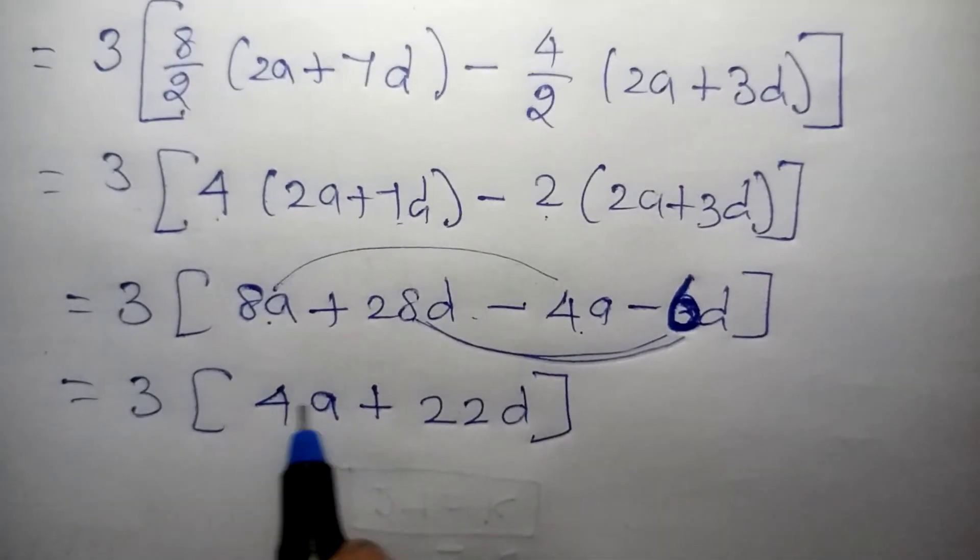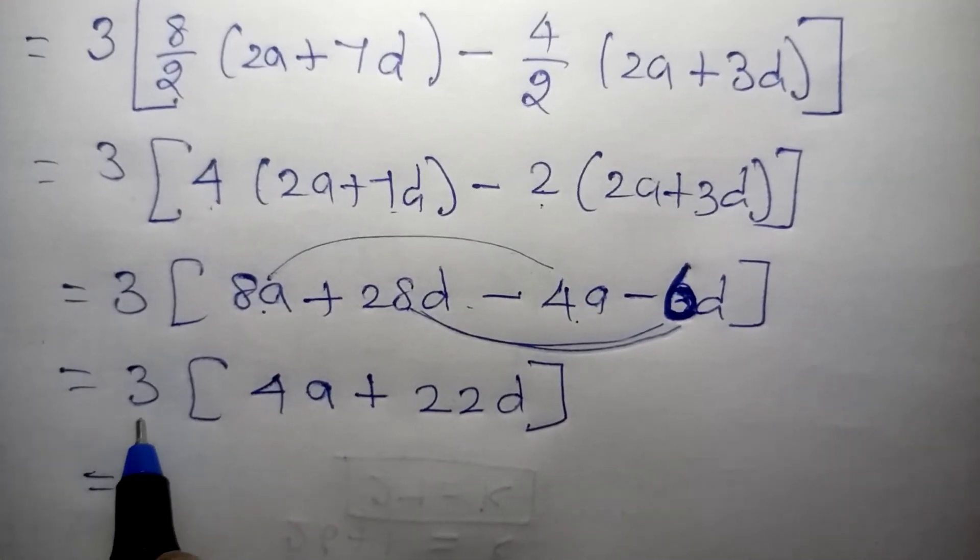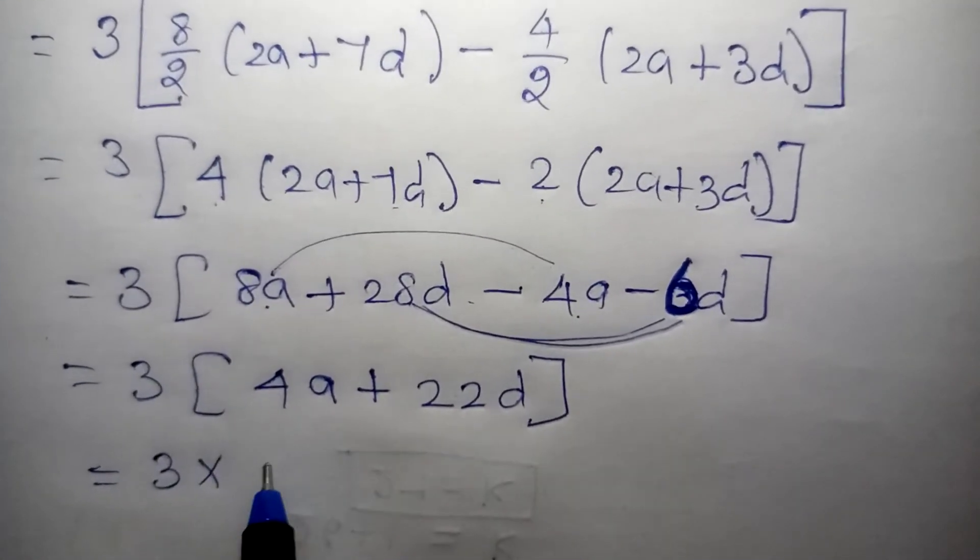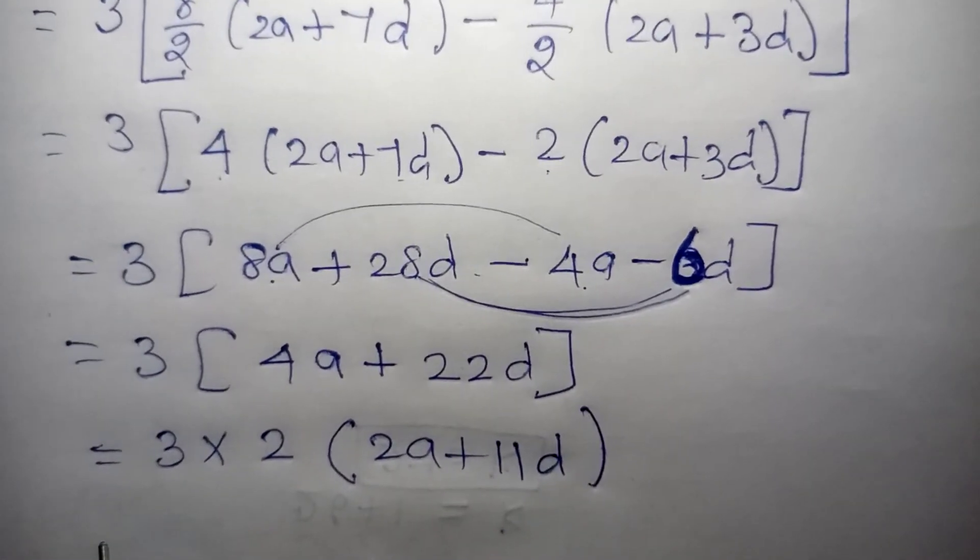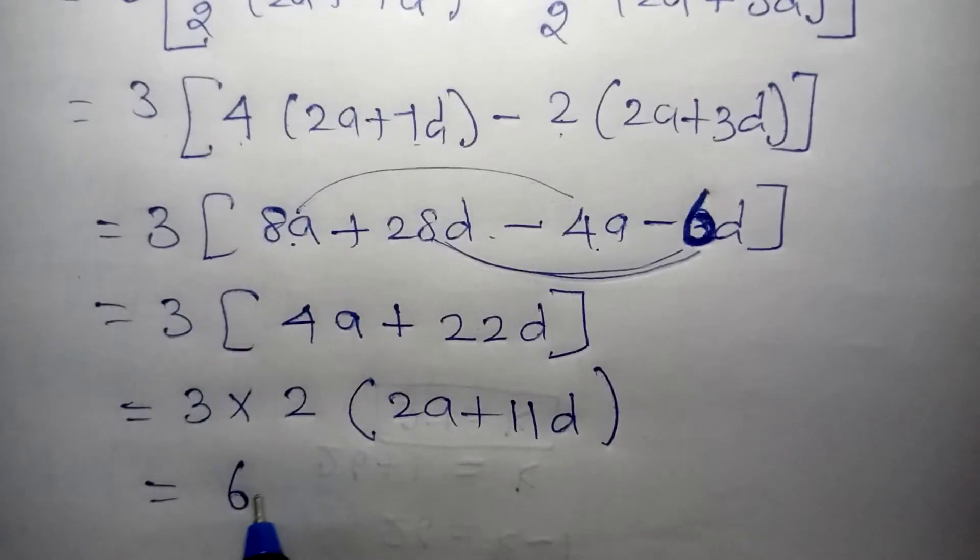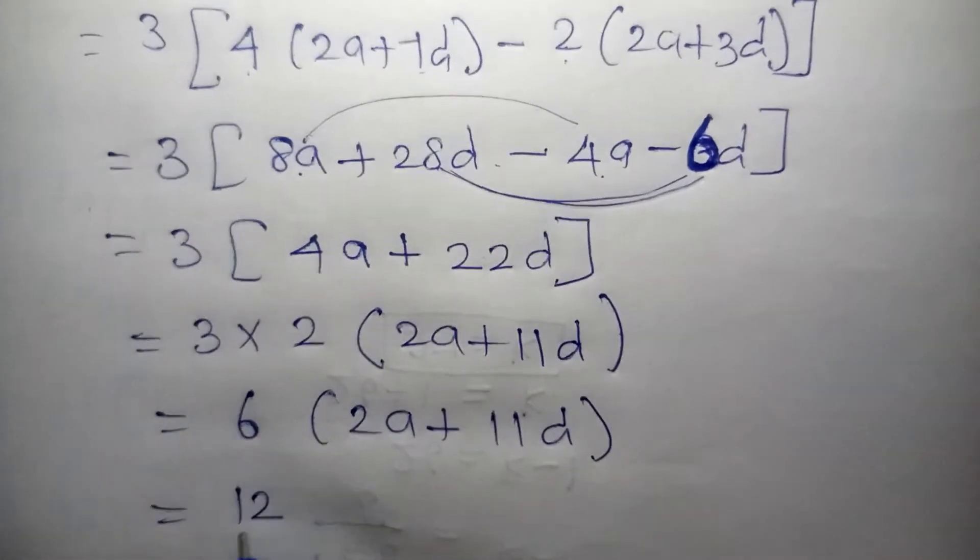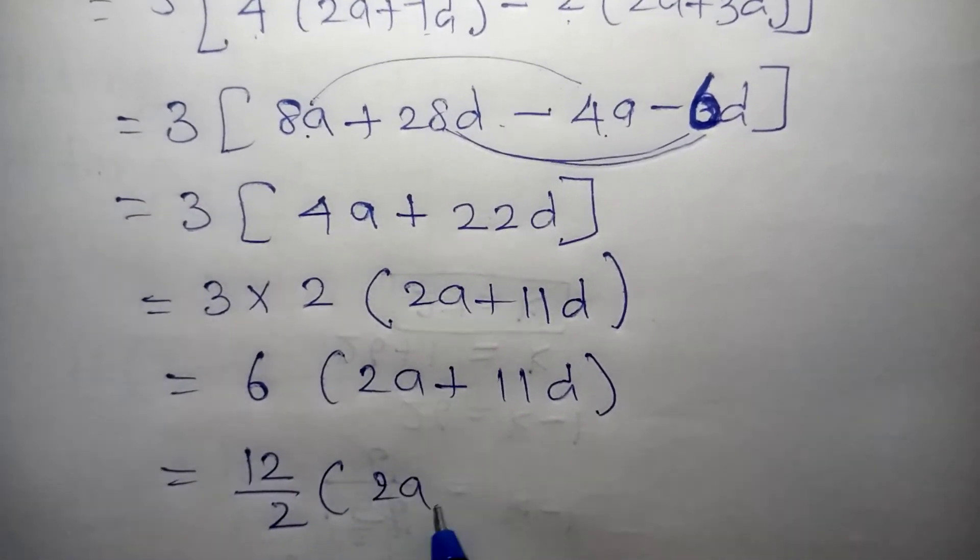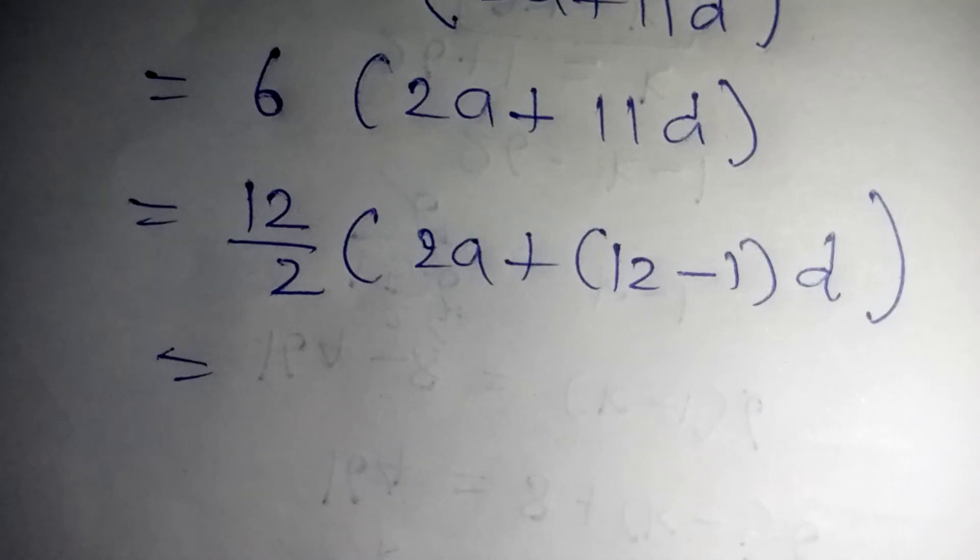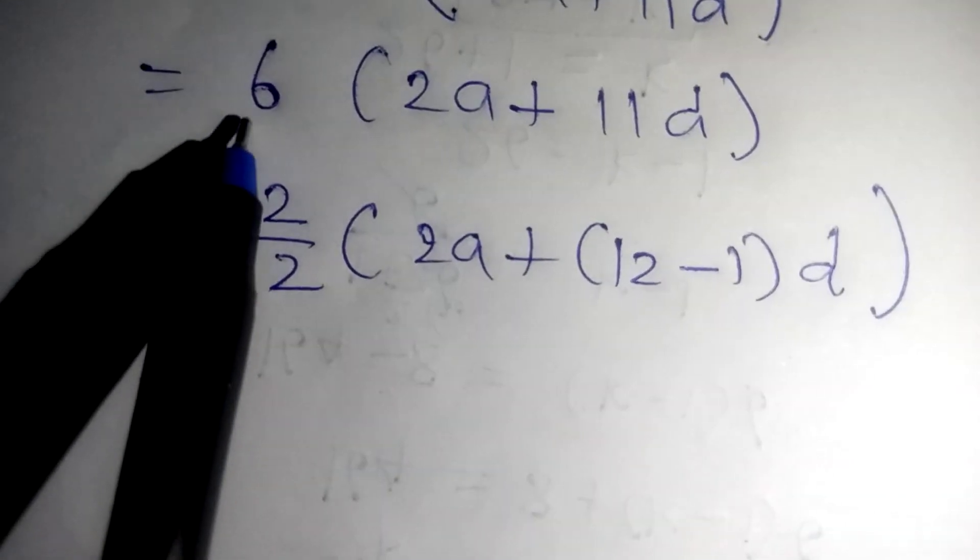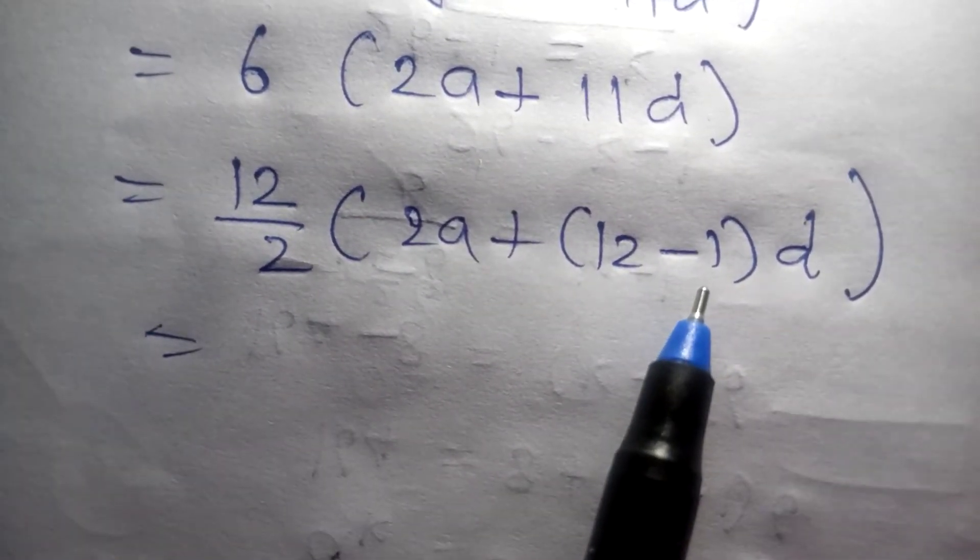Now d, 28d minus 6d, from 28 if I subtract the 6 that will give you 22d. Now we are getting this. From these two, what is a common table means? 2 table is common. Let us take the 2 outside. Now here outside we already have a 3. Now 3 into 2 we have taken out, so the remaining is 2a plus 11d. Now here 6 into 2a plus 11d is given. Now let us write, 6 can be written as 12 by 2, 2a plus 11 can be written as 12 minus 1 into d.